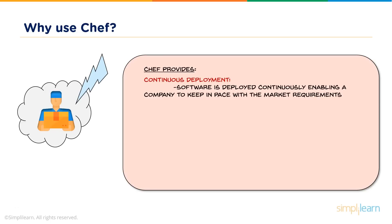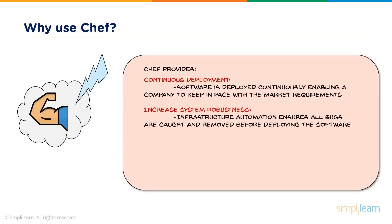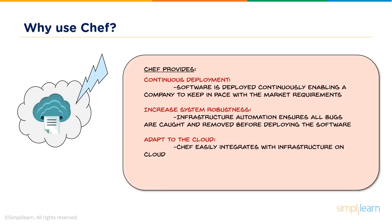Chef provides continuous deployment — products and updates come out in days, so it's vital a company can deploy the moment something is ready. Chef also provides increased system robustness: it can detect bugs and remove them before deploying into the real environment. Additionally, Chef adapts to the cloud, making itself easily integratable with cloud platforms, since today services, tools, and solutions all revolve around the cloud.